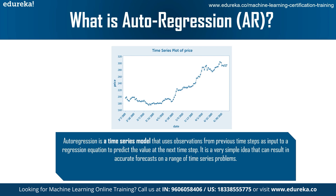To calculate the value at time step T for value Y, the regression equation is: Yt is the value at time T, C is the constant, phi is the coefficient for each of the previous timestamp values, and eta is the error term of the equation.